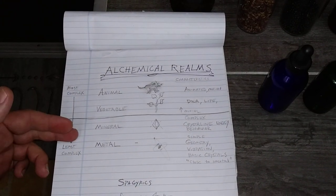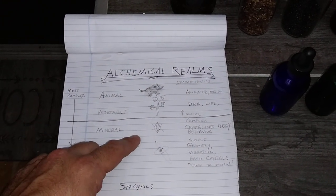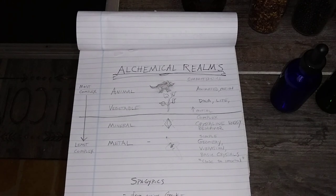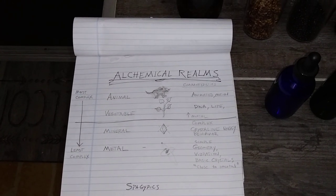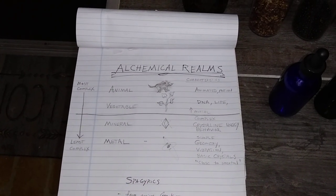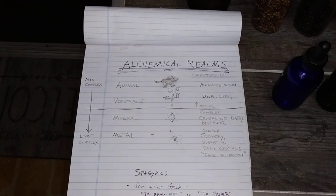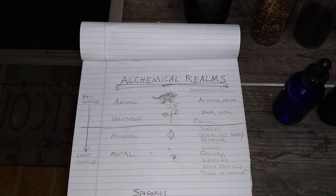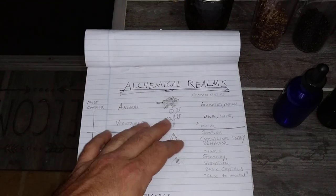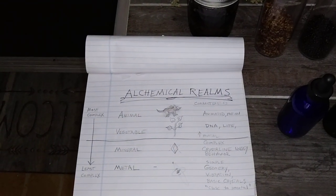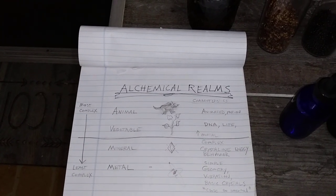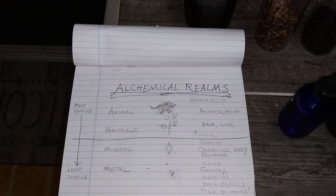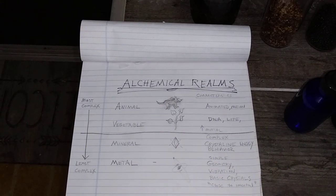As you work your way up in complexity you get to minerals — you have crystalline structures, you can get more complex behaviors: photovoltaics, piezoelectrics. Many amazing things happen in the crystalline area; this is where computing can be done. As you go even further up you cross the line of mortality where you're into the substance of DNA, the thing of life, and this is the vegetable realm. Of course it is limited in that it does not move, but once you get even higher in complexity you're into the animal realm with a nervous system — it's animated, and it's the most complex of the realms.